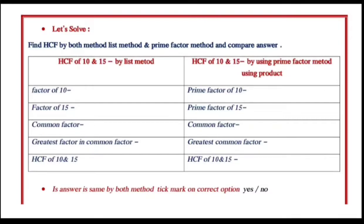Let's solve: find HCF by both method, list method and prime factor method, and compare answers. HCF of 10 and 15 by list method in this column. HCF of 10 and 15 by using prime factor method using product in this column.